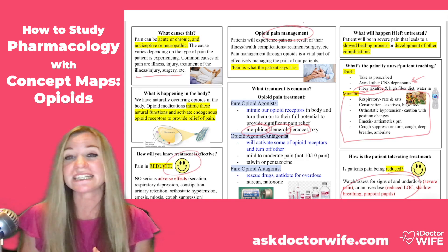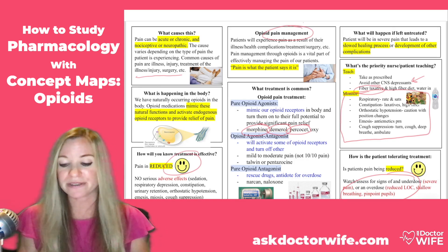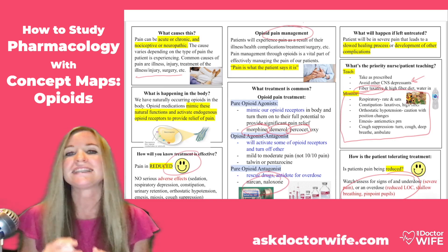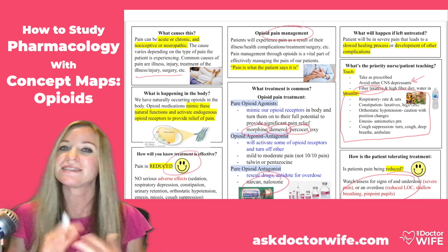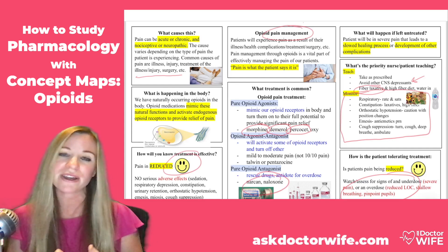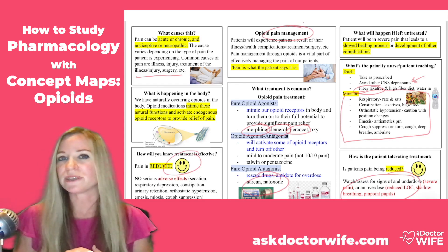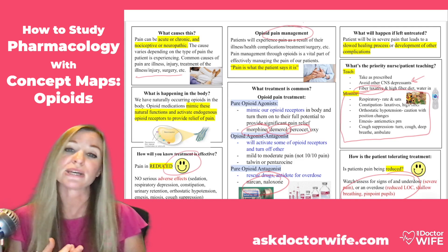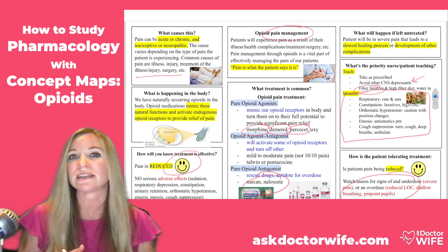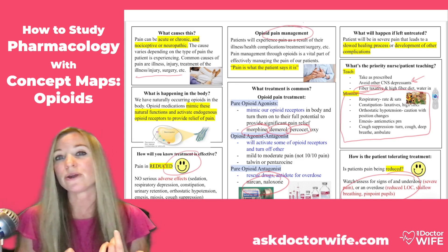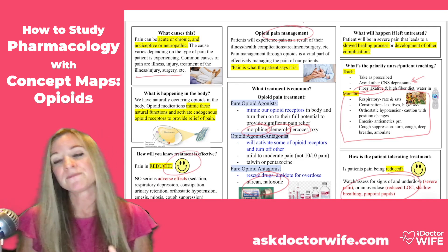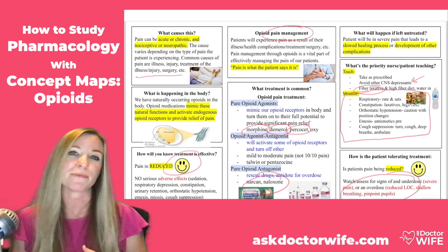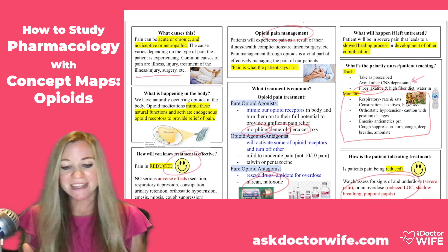We do have an antidote for opioid overdose: it is Narcan, or Naloxone. This is our antidote drug — it's on every crash cart and always available in case of an emergency. Now it's even becoming more popular in the community for patients who struggle with opioid addiction or those on opioids long-term because of chronic pain.